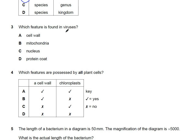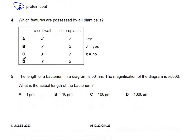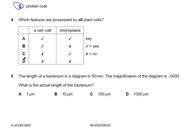Question 3: which feature is found in viruses? Viruses are acellular and do not carry any cell wall, organelles, or nucleic acid; however they carry a protein coat. This is a straightforward question with the answer D.